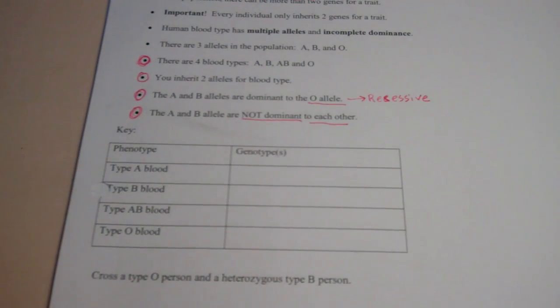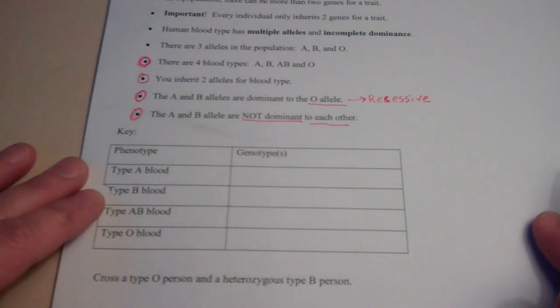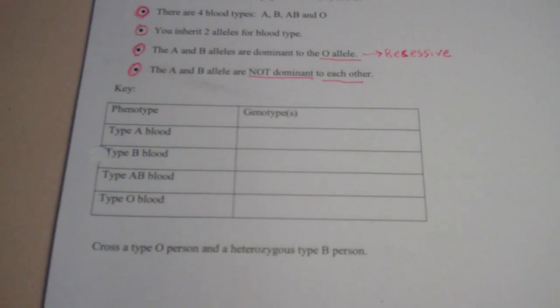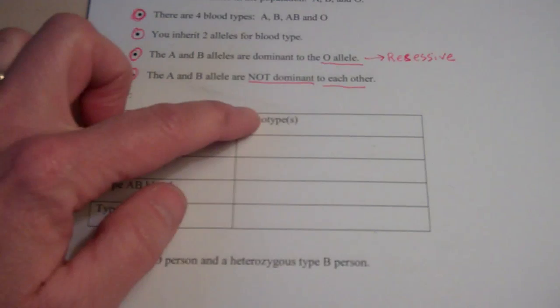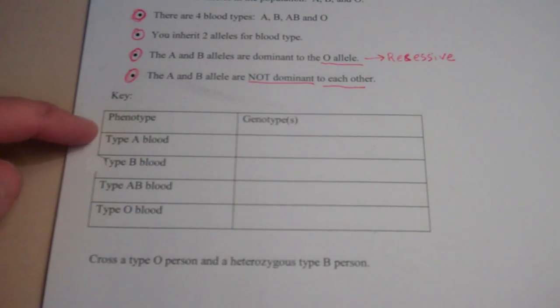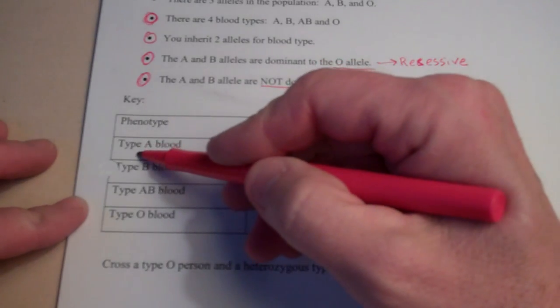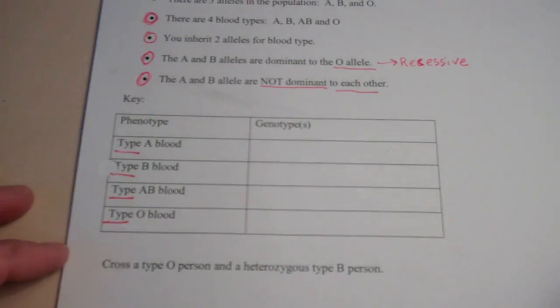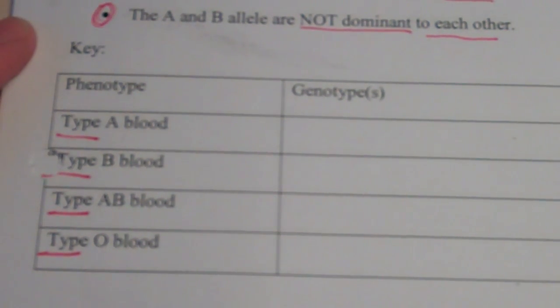Now the key to doing a blood typing problem is filling out the key properly. Please memorize this key as is when you do your genetics problems and you should be fine if you do. Phenotype on the left, genotype on the right. Phenotype are the types of blood. Please write the word type before each one when you are filling out your own key, which you will be doing from time to time.